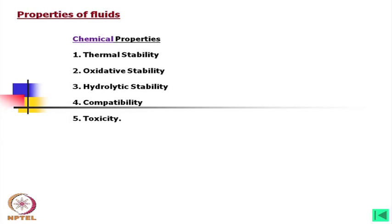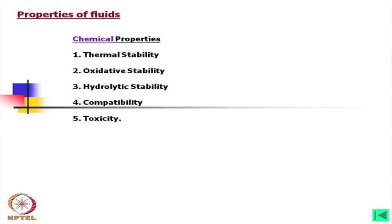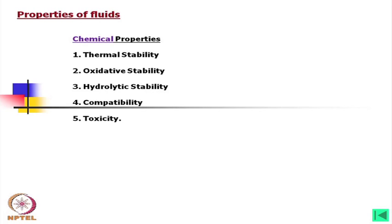What are the chemical properties we need? Number one is thermal stability — with an increase in temperature, the composition of the fluid should not change; the chemical properties we have should not change. Then oxidative stability — the oxidization of the fluid is a problem, so we have to look into that. Third, hydrolytic stability — from the fluidity point of view, we need stability in this regard.